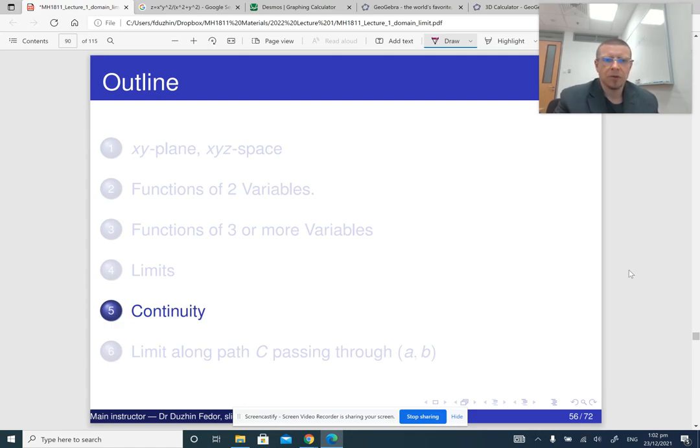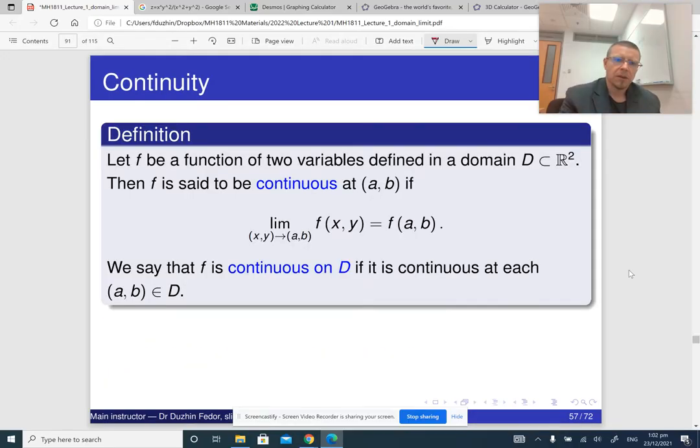All right, let us now talk about continuous functions. Well, the definition of a continuous function is that a function of two variables is continuous if, at a certain point (a, b), the limit of the function as x approaches this point is the same as the value of the function at the given point.